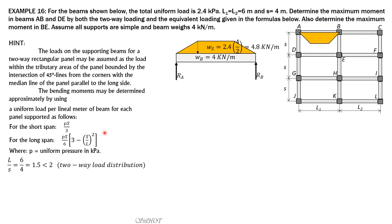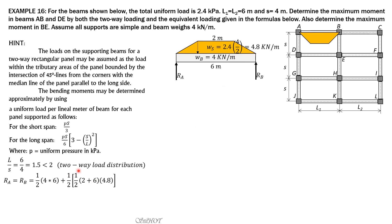This beam is simply supported. We will compute the maximum moment based on the actual loading first and verify the formulas after. RA equals RB equals the total load divided by 2. The span is 6 meters, with the triangular portion being 2 meters. So RA equals RB equals one-half of 4 times 6 plus one-half of the area of the trapezoid, which is one-half of (2 plus 6) times 4.8. Solving, RA equals RB equals 21.6 kN. The maximum moment occurs at mid-span, so we sum moments about that point considering loads to the left.